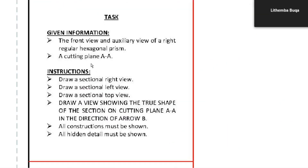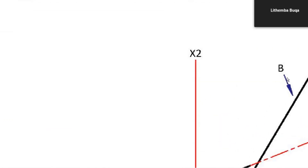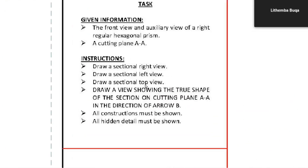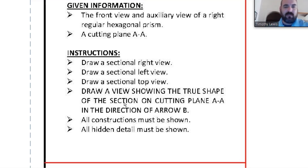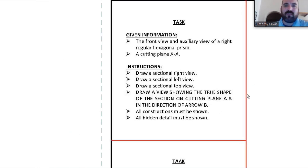You have to be very careful when reading this in the exam. The first part is straightforward - section, right to left view, top view, no problem. But the fourth bullet reads 'draw a view showing the true shape of the section on cutting plane A in the direction of B.' Now if the exam reads 'determine and draw the true shape of the section,' you're not required to draw the entire view - only the actual cut surface. When they say 'draw a view,' you draw the entire view.